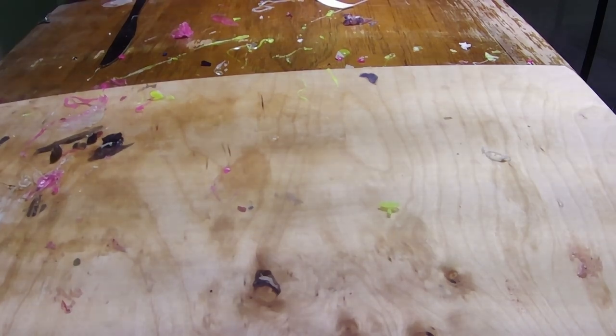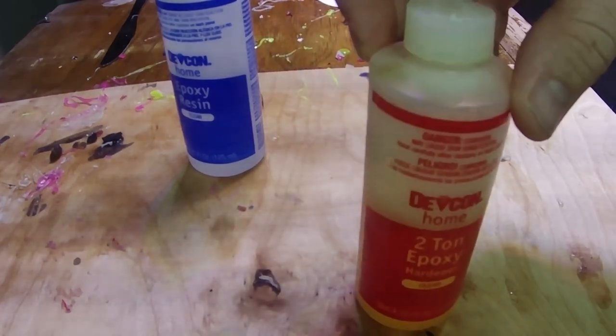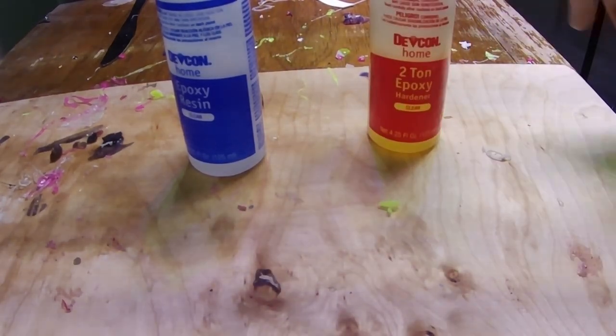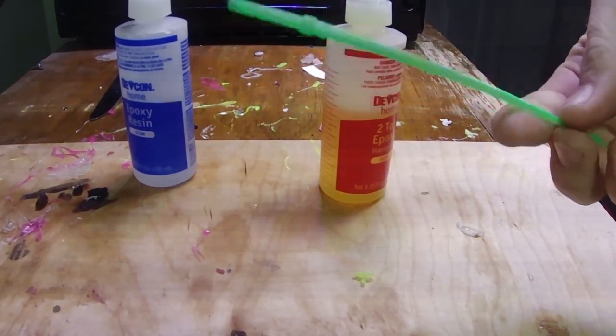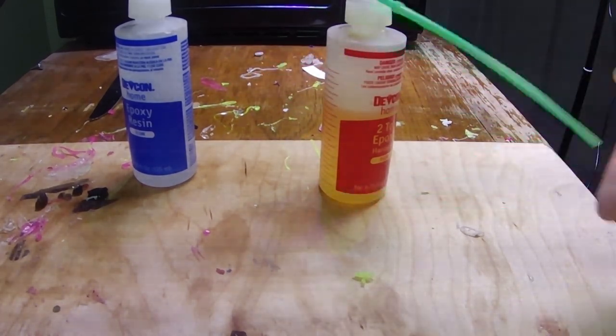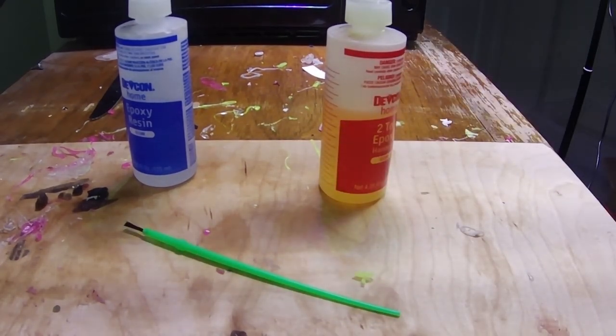All right so the first step you need some kind of adhesive to glue the two halves together. I'm using epoxy Devcon two ton. You could probably get away with super glue for something like this. Now to go along with the epoxy you're going to need something to brush it on. You can use a brush like I'm using, a butter knife, toothpick, popsicle stick, whoever gets the job done.